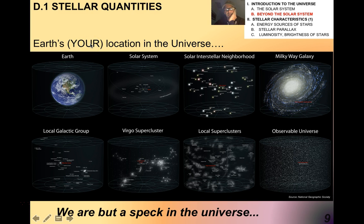Your location in the universe—this is kind of bewildering and mind-blowing. Here's Earth. Earth is in the solar system. The solar system is in the solar interstellar neighborhood, which occupies this tiny branch of the Milky Way galaxy. The Milky Way galaxy is part of a local galactic group, which is a bunch of other galaxies, which is part of a Virgo supercluster, which is part of a group of local superclusters, and that makes up the observable universe. It's absolutely astonishing. The scales we're talking about here are unimaginably big. It is true that we are but a speck in the universe.